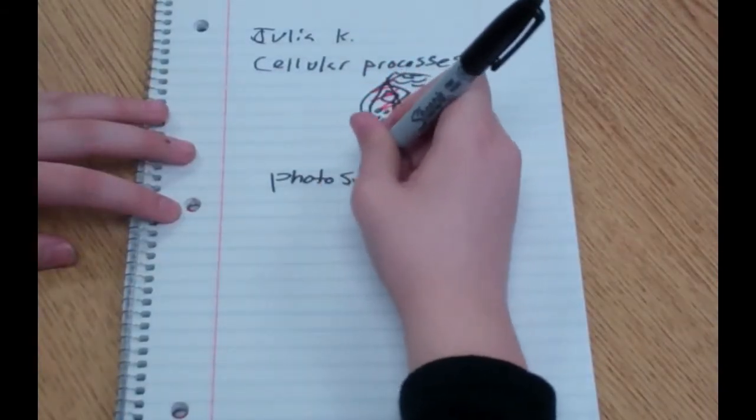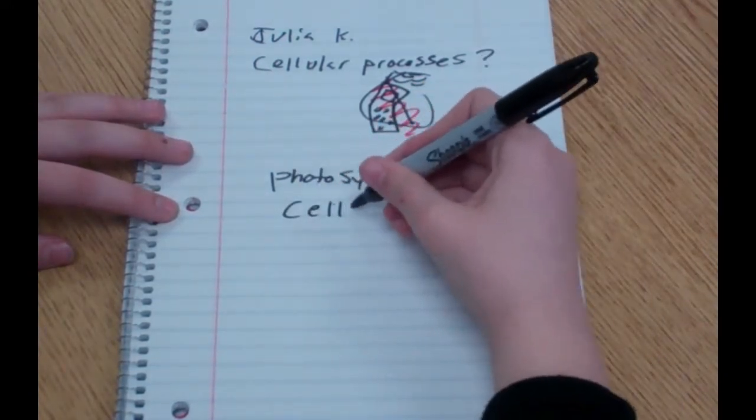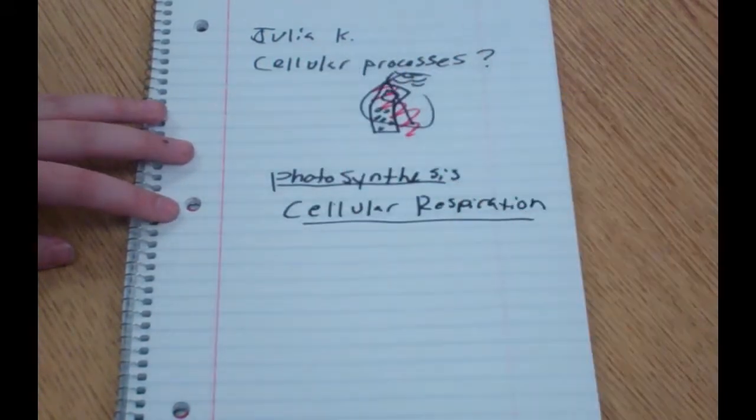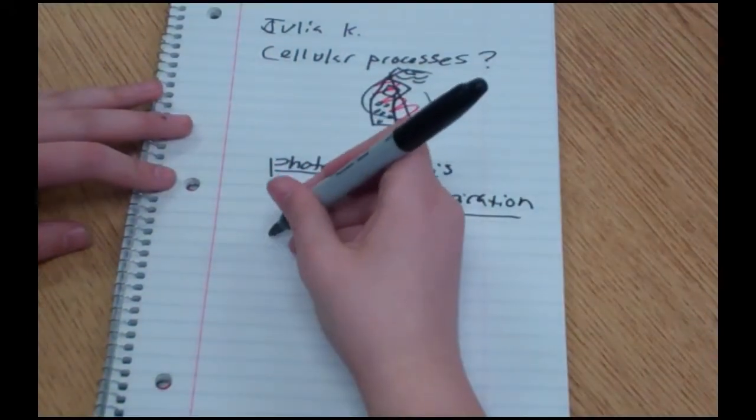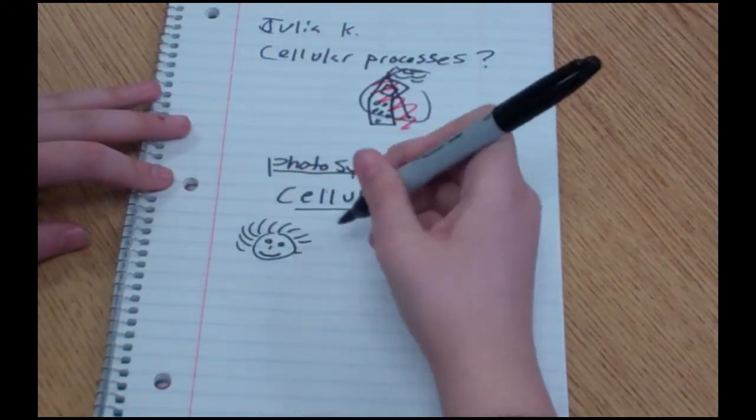The particular process we're discussing is the process of photosynthesis and cellular respiration in plants, which is a cyclical process. But, since your teacher's decided to go all brainy Einstein equations on you, you decide to start doodling.